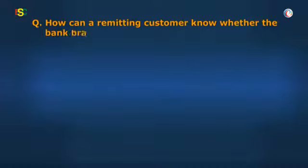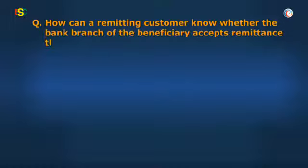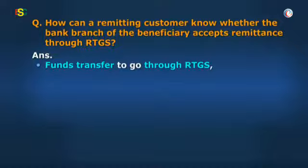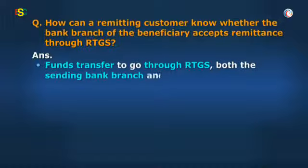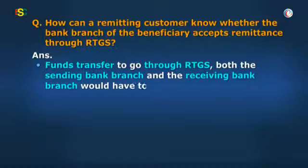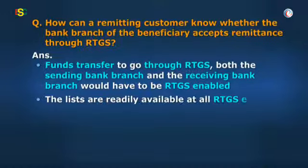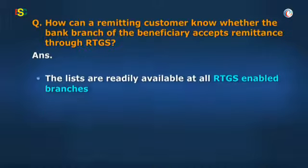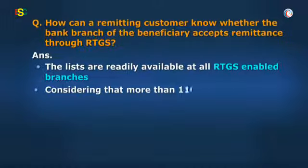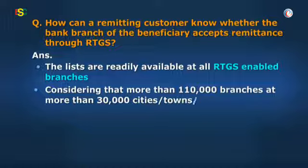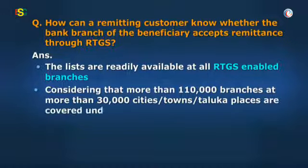How can a remitting customer know whether the bank branch of the beneficiary accepts remittance through RTGS? For a funds transfer to go through RTGS, both the sending bank branch and the receiving bank branch would have to be RTGS enabled. The lists are readily available at all RTGS enabled branches. Besides, the information is available at the RBI website. Considering that more than 1,10,000 branches at more than 30,000 cities, towns, or taluka places are covered under the RTGS system, getting this information would not be difficult.